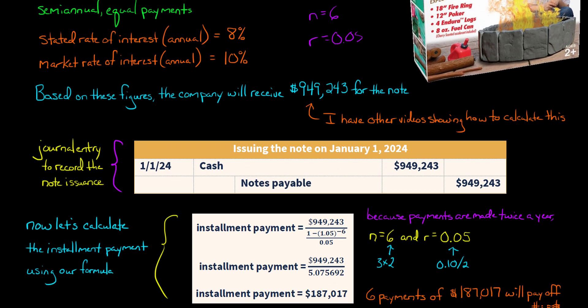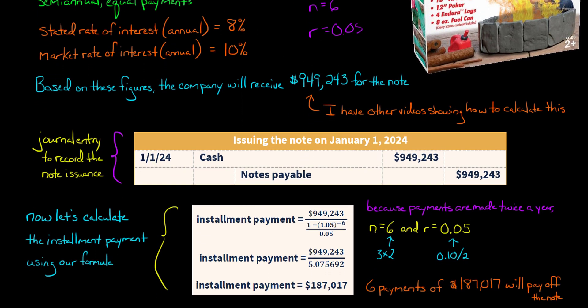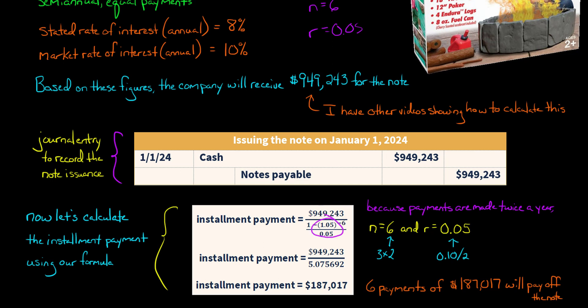Now we need to figure out these payments. Using the formula with the amount borrowed of $949,243, R of 0.05 (the market rate divided by two), and N of 6 (three years semi-annual, so 3 × 2 = 6), we get $949,243 divided by the denominator — and we end up with an installment payment of $187,017. That means there will be six equal payments of $187,017, and that will fully pay off the loan by the end of three years.